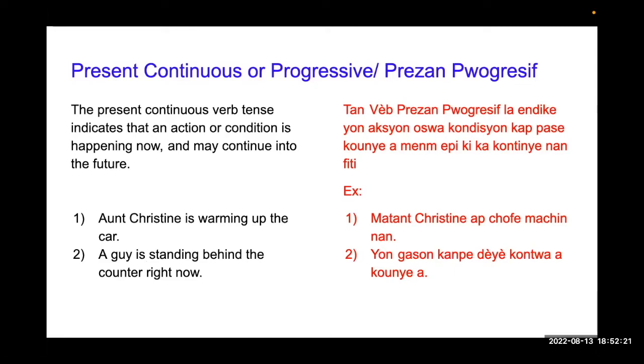The present continuous verb tense indicates that an action or condition is happening right now, and may continue into the future. Tan verb present progressive la indike yon aksyon ou swa kondisyon ka passe kounye a men, epi ki ka kontinye nan fiti.